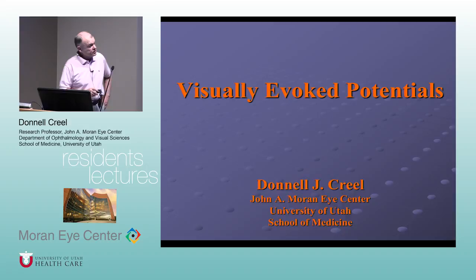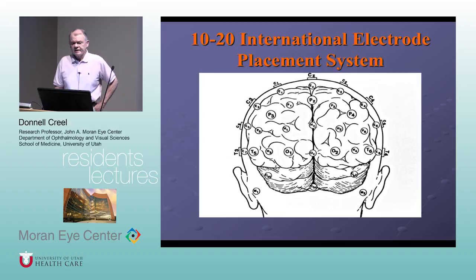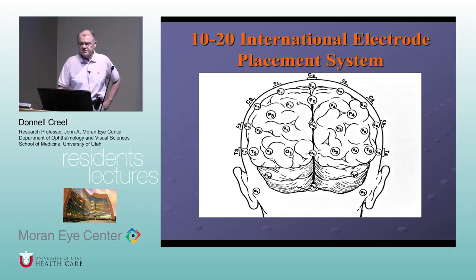Visually evoked potentials were first noticed in EEG recordings in the 1930s. Clinical EEGs date from fairly recently — not 100 years ago — from a German neurologist named Berger, with the publication around 1929. By the early 1930s, they were recording EEGs in the United States.